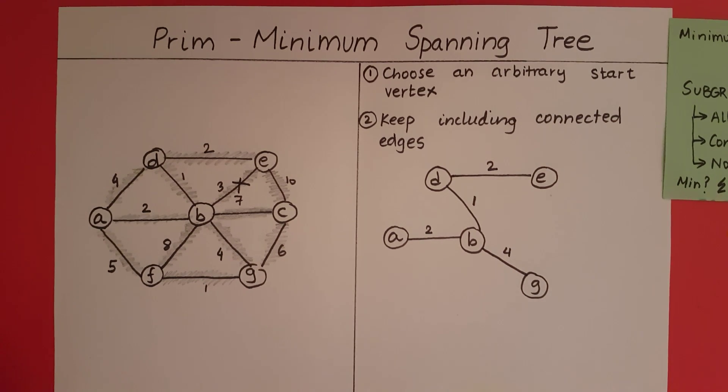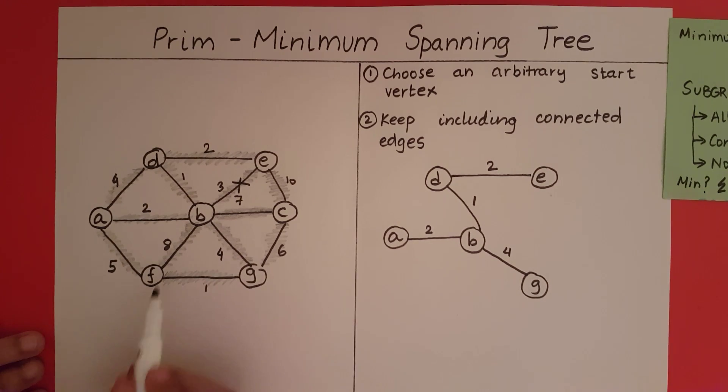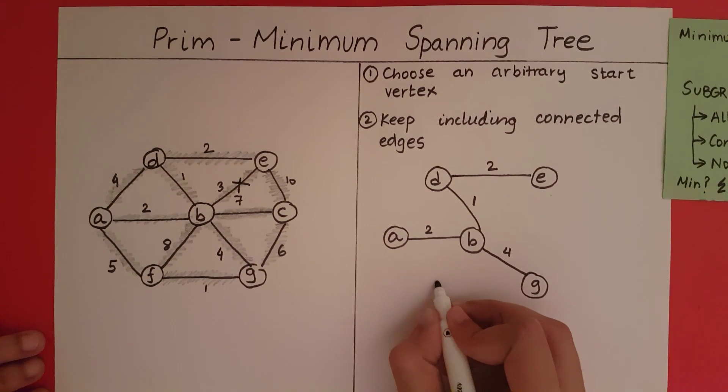Now let's see what edges are connected to G. Out of these edges, the minimum is an edge of distance 1, so we insert that.